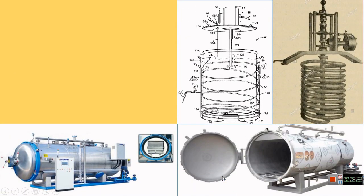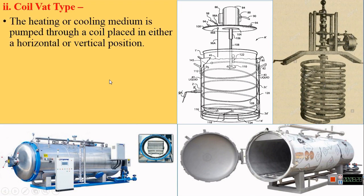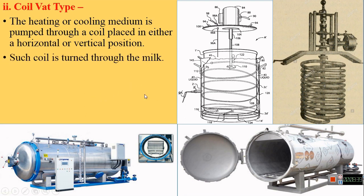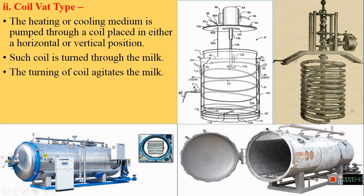The next type of batch pasteurizer is the coil vat type. In this model, the heating or cooling medium is pumped through coils placed in either horizontal or vertical position. Such coils are immersed through the milk in order to carry out its heating or cooling. Through these coils, the cooling or heating medium circulates, and turning of these coils facilitates heating or cooling of the milk.